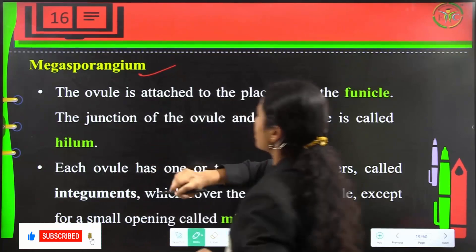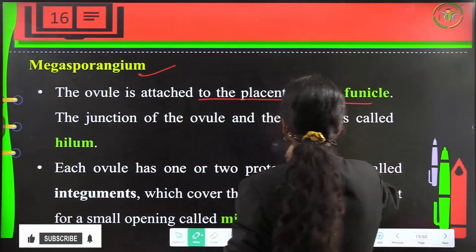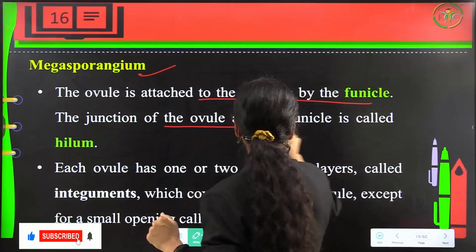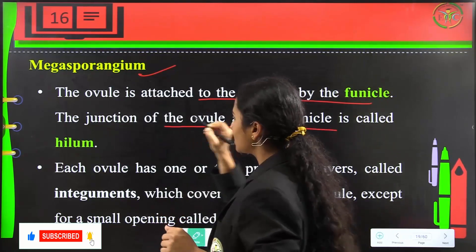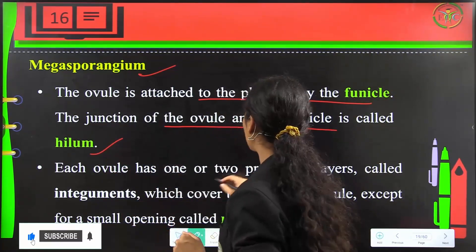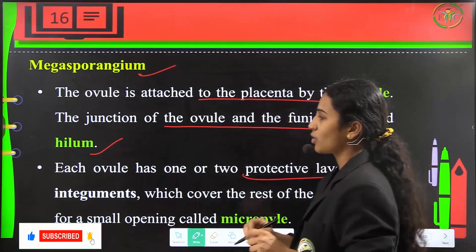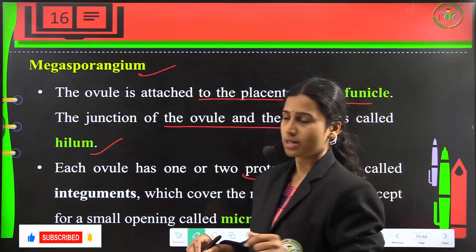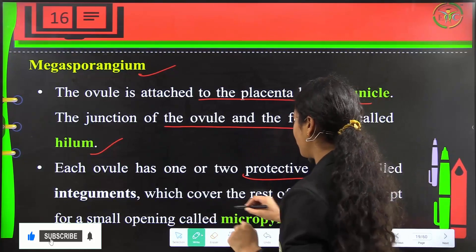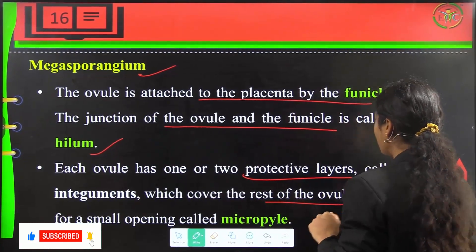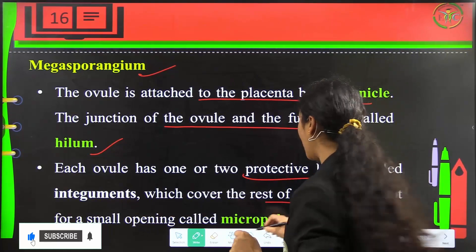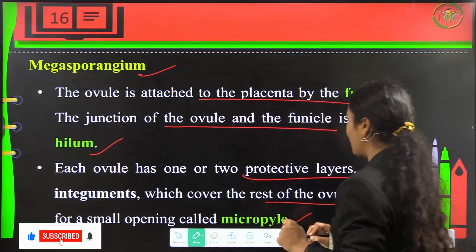The megasporangium, or ovule, is attached to the placenta by a funicle. The junction of the ovule and the funicle is called the hilum. Each ovule will have one or two protective layers called integuments, covering the rest of the ovule except for a small opening at the micropyle end.